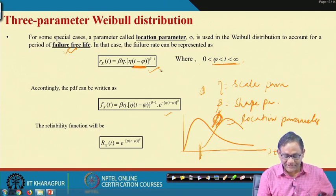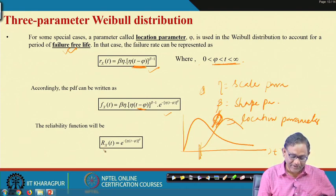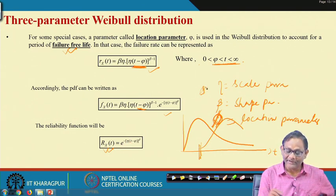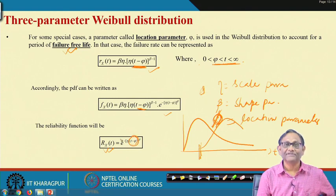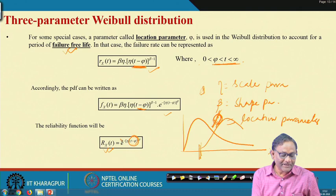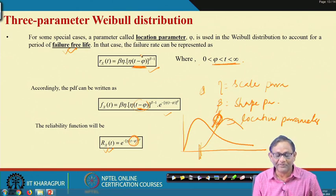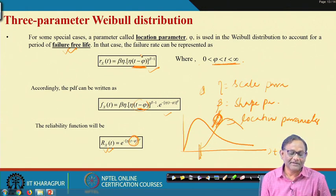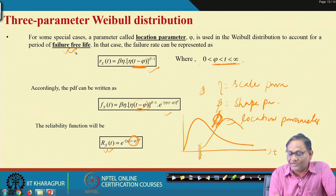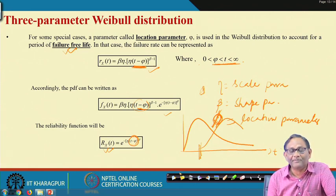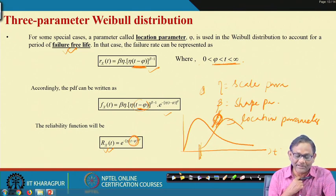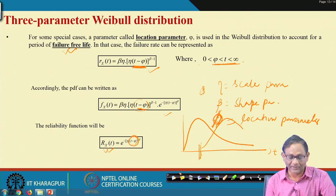When the location parameter is used, t is replaced by (t − φ) throughout. So reliability becomes R(t) = exp(−η·(t−φ)^β) and the PDF changes similarly — every occurrence of t is replaced by (t−φ). Most of the time φ is considered as 0, but when a failure-free life must be modeled, an appropriate φ value is chosen using parameter estimation methodology.